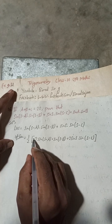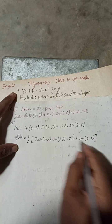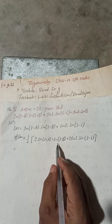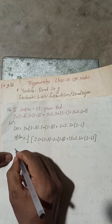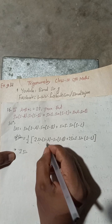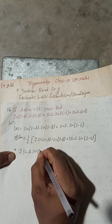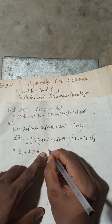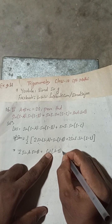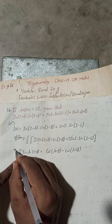If we take 2 as a common factor, the 2 outside and 2 inside cancel, so the equation is not affected. Now we have the formula: 2·sin(A)·sin(B) = cos(A−B) − cos(A+B). We are going to apply this formula.